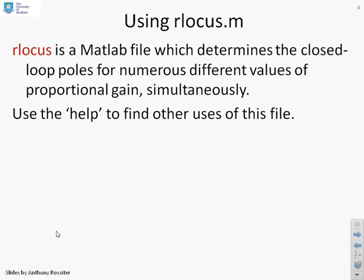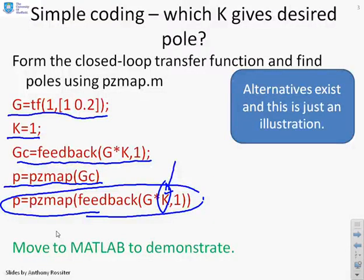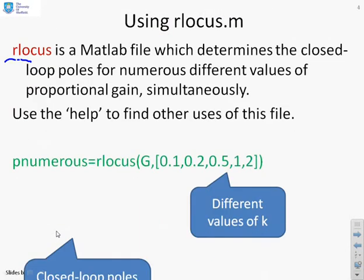OK, so let's ask a different question. What happens if you've got lots and lots of different values of K to try? And clearly doing it this boring way is going to take a long time, you know, put the command line, change the K, put the command line, change the K. And there exists some code in MATLAB which will do lots of K for you simultaneously. So you might decide that's the best way to go.